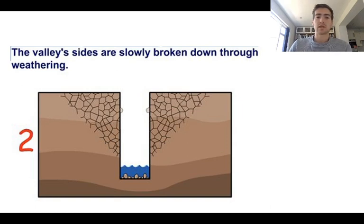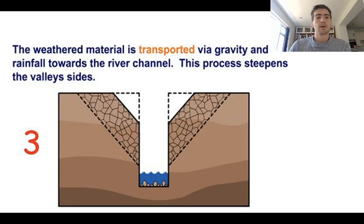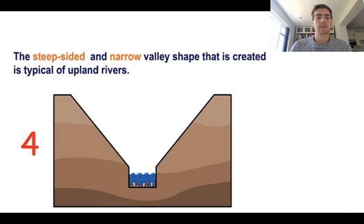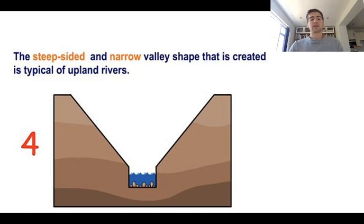The valley sides are slowly broken down through weathering — they start to get broken down because of the more extreme weather found high up in the mountains, like heavy rain and high winds. The weathered material is transported via gravity and rainfall towards the river channel, which steepens those valley sides and makes them more exaggerated. The steep, narrow valley shape that is created is typical of upland rivers, and you'll be left with this v-shaped valley. This process happens over hundreds of years — it doesn't just happen over a few years.